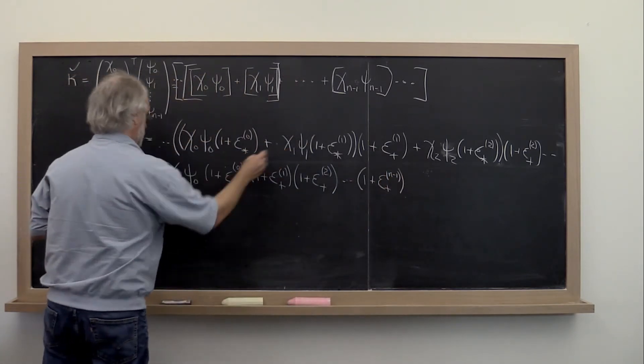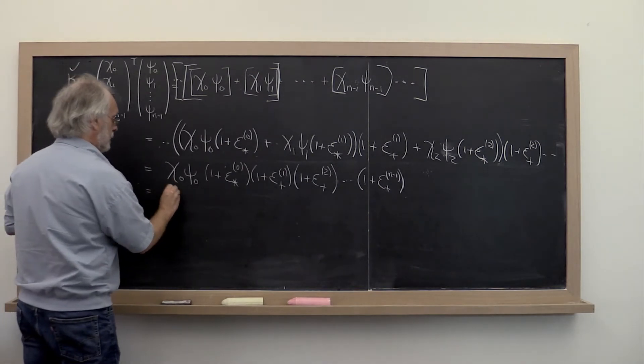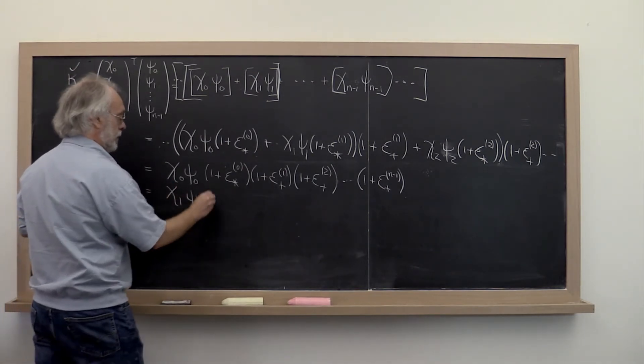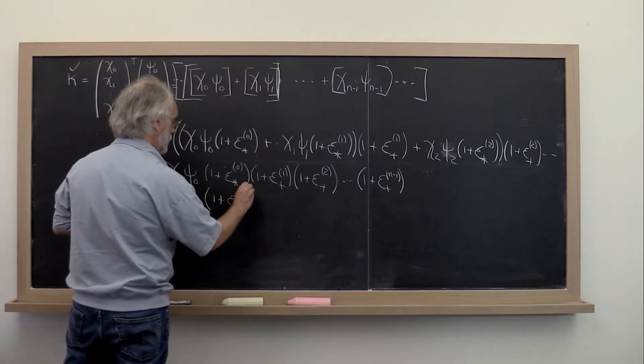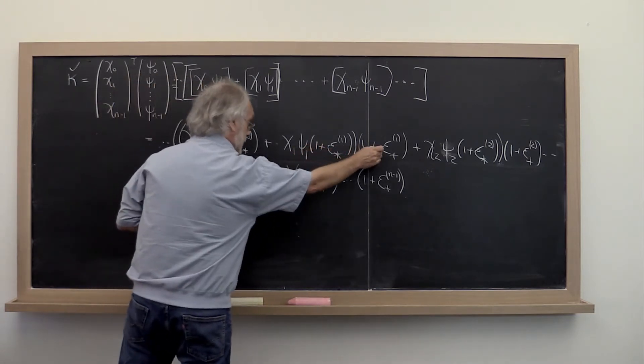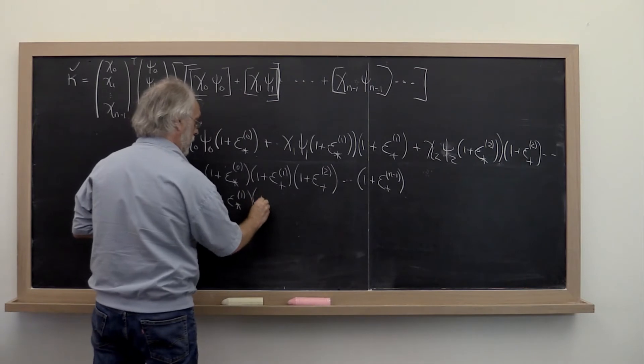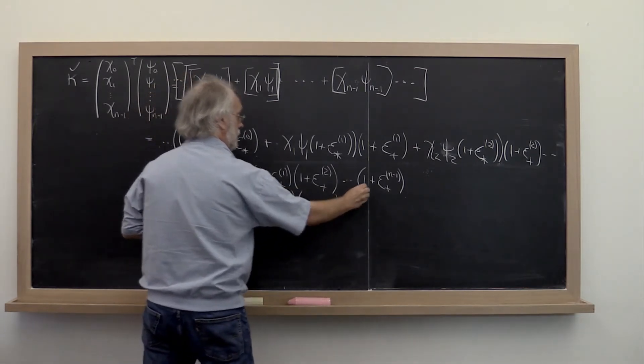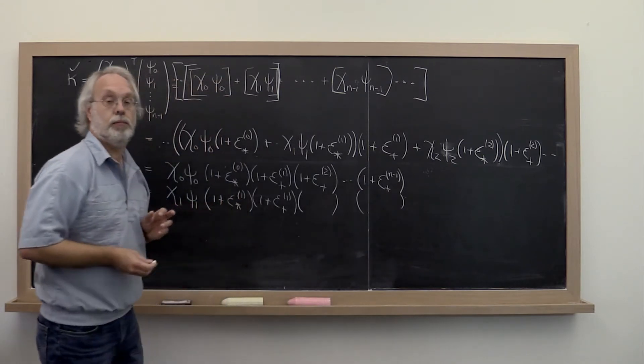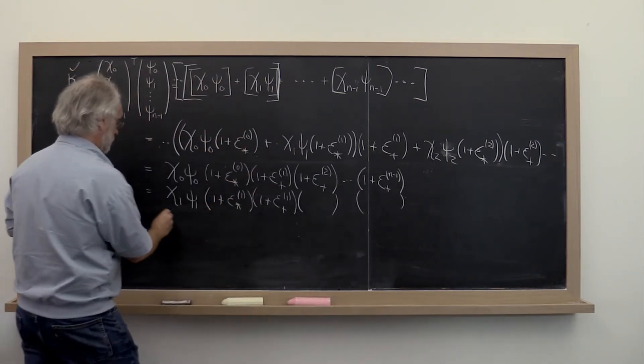If you look at the second term, the second term is hit by 1 plus epsilon star 1, and then the same sequence here, 1 plus epsilon plus 1, and so forth.